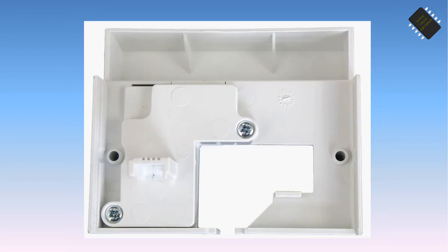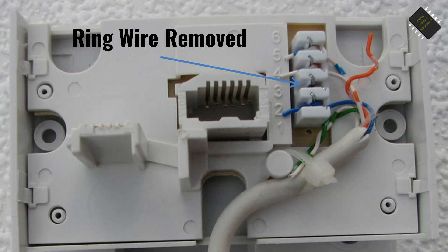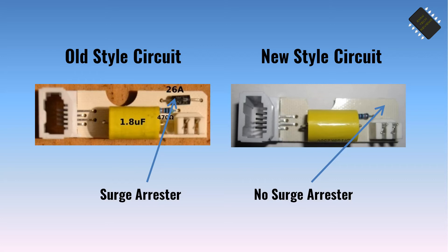For this reason it is recommended to fit an I-Plate to the Master Socket. The I-Plate uses a bell wire choke to cut the wire short so that it is not connected to the extension wiring; however it does not have a built-in filter, so you would still need microfilters fitted to your extension sockets. Alternatively you can simply disconnect the bell wire from within the Master Socket by removing the wire from terminal 3. The older style Master Sockets included a surge protector as part of the circuitry, but this has been removed in recent models as it was found to hinder the VDSL signal. If you have one of the older style Master Sockets then you may wish to upgrade to one of the newer models.